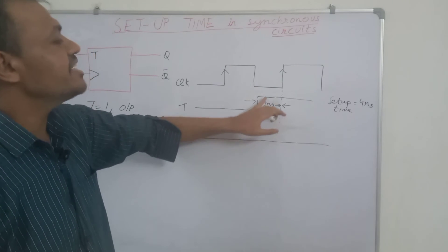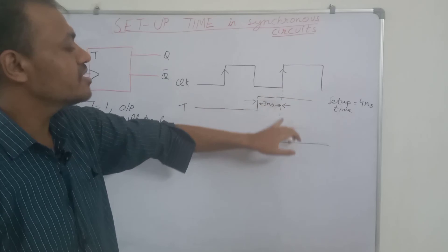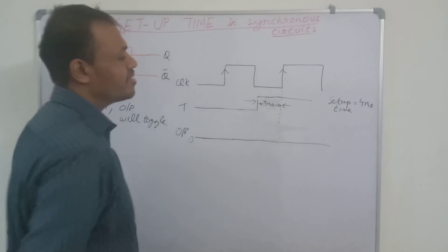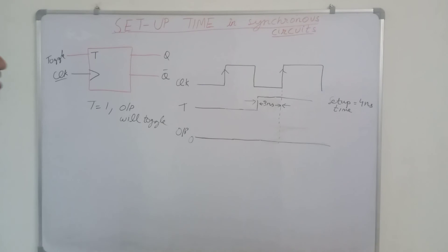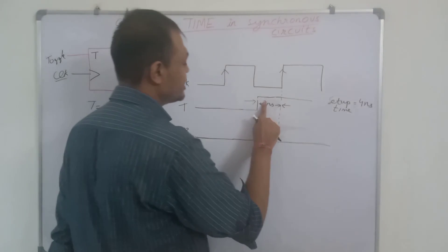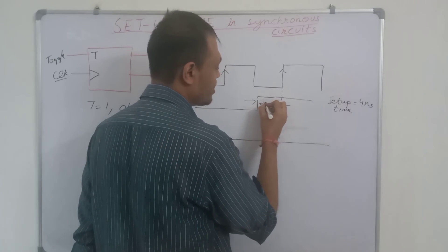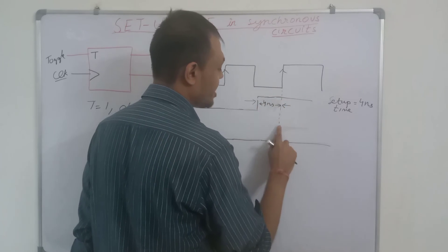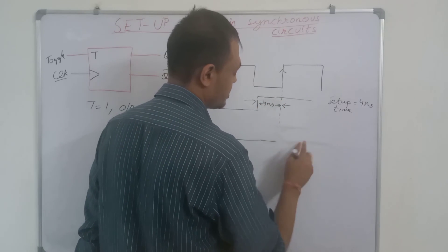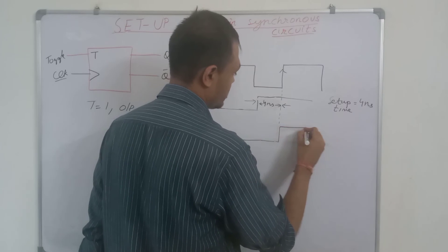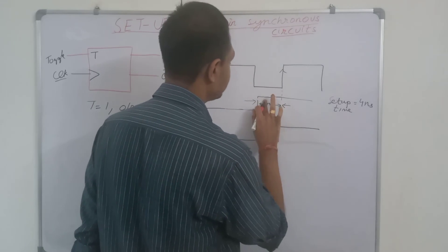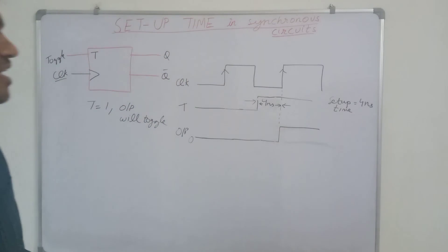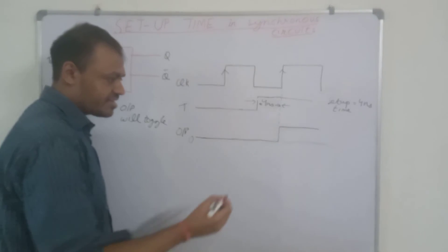This output did not change even when the positive edge of the clock was applied. But if this T changes 5 nanoseconds or 4 nanoseconds before, then our output will toggle. If this is 4 nanoseconds, then the output will toggle and output will become 1.